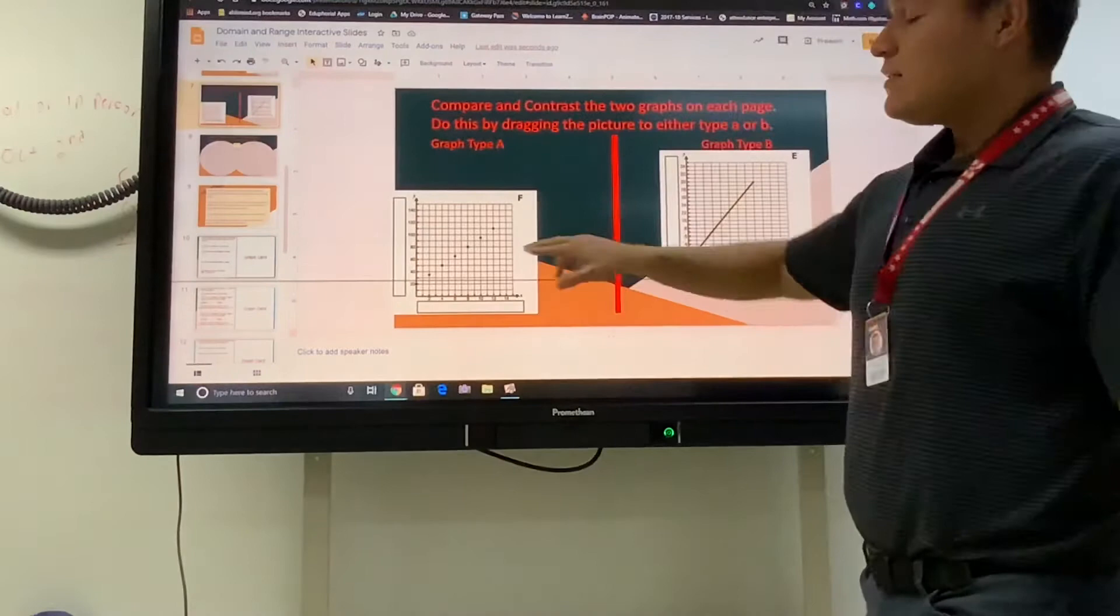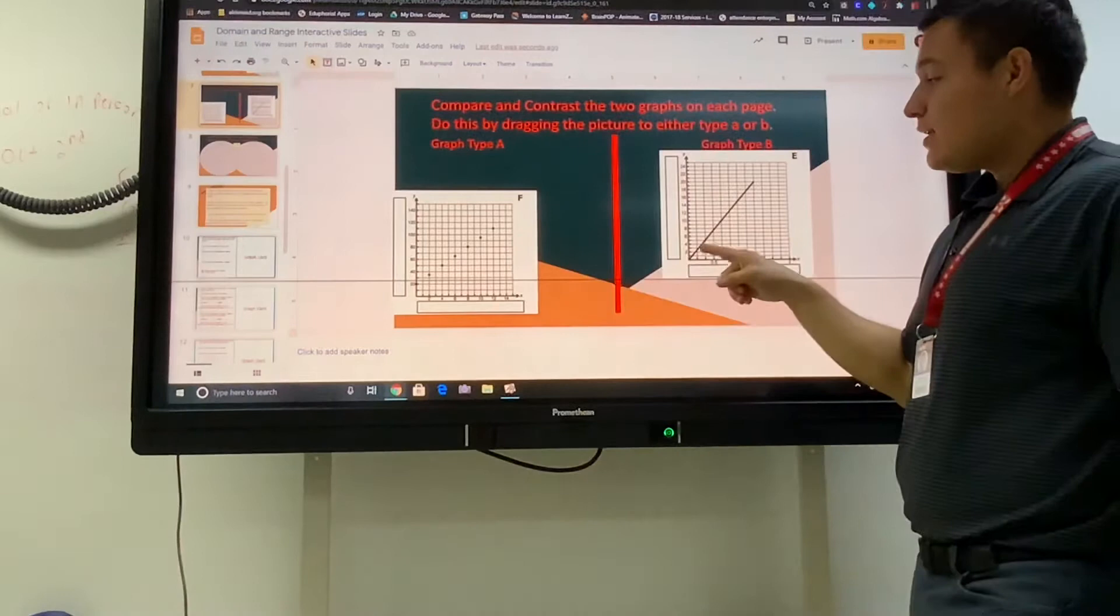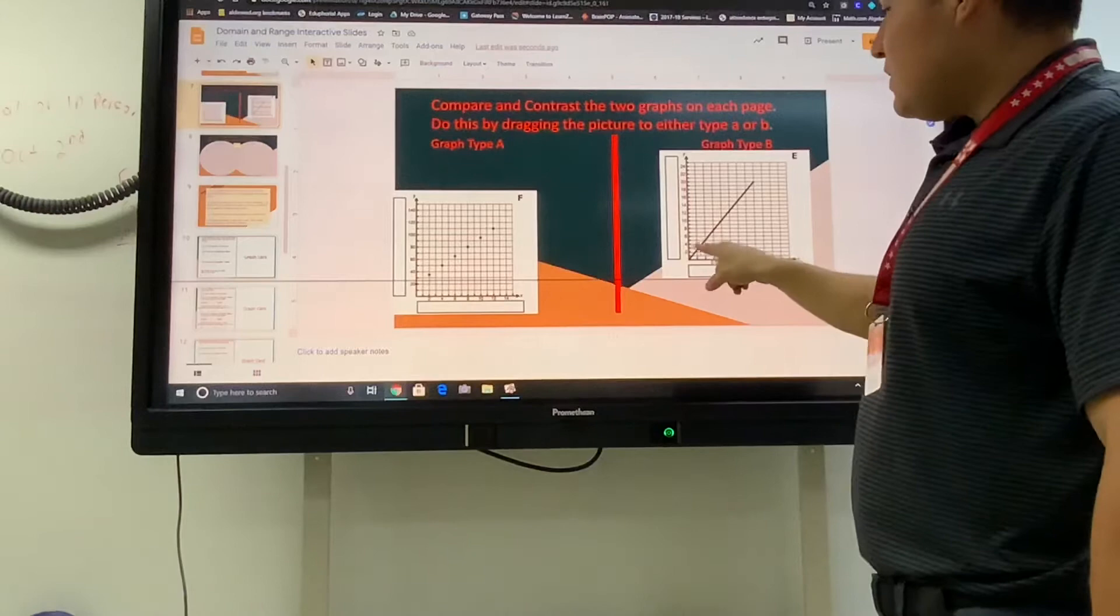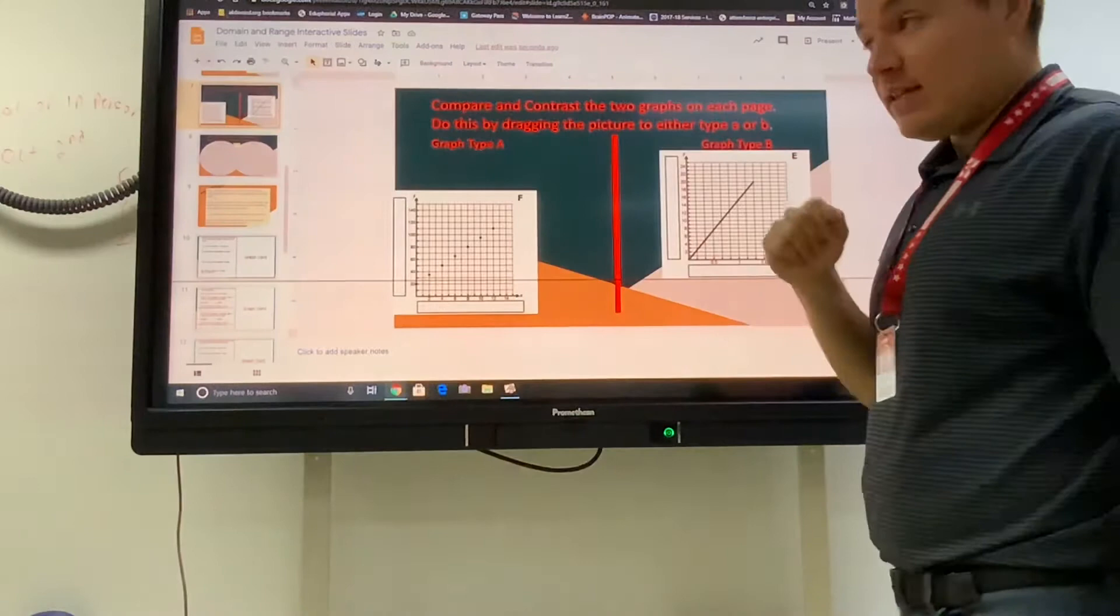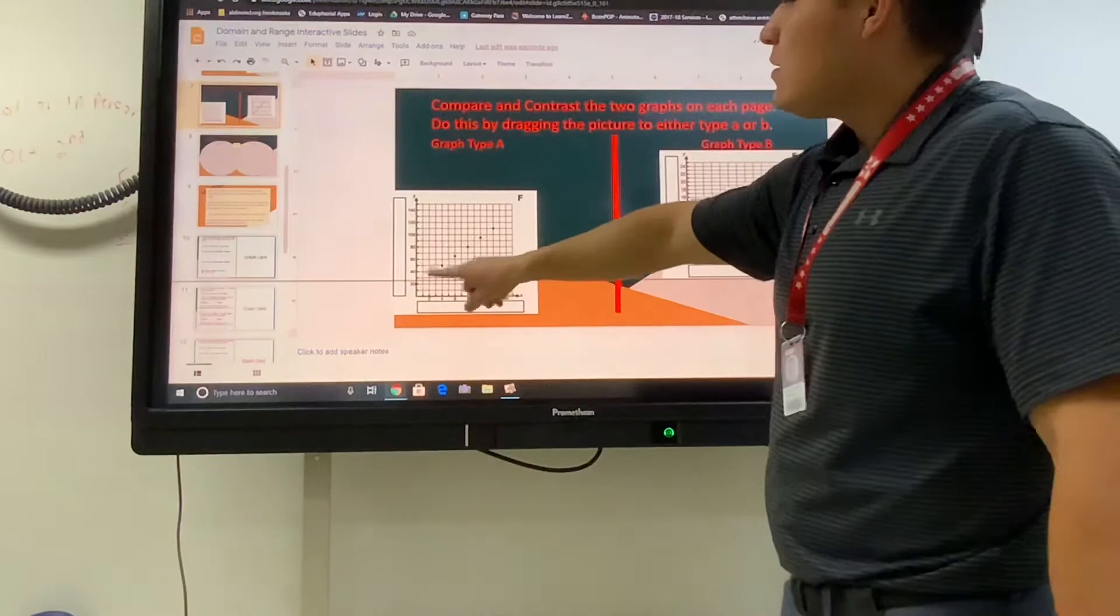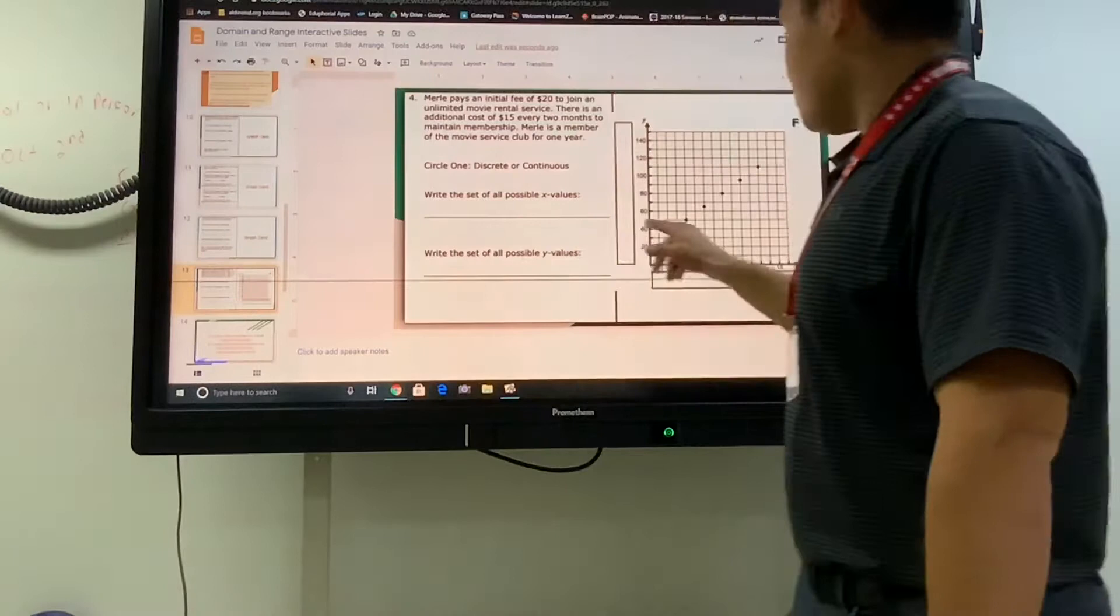The difference is this one only has specific answers, while this one can have an infinite number of decimal answers in between. This one has lots of little tiny connections. You can go anywhere in between this line. Any decimal on that line is good to go, that's an answer.